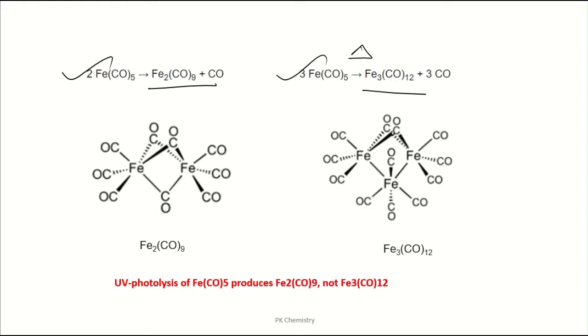And if you look at Fe2(CO)9 structure, it has three bridging carbonyl. There is no metal metal bond. But if you look at this Fe3(CO)12, it has only two carbonyl, also two metal metal bond.